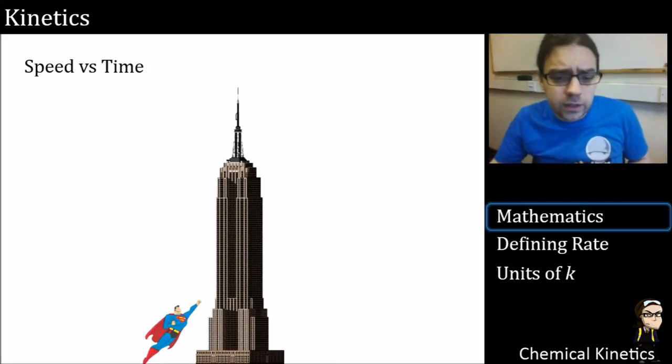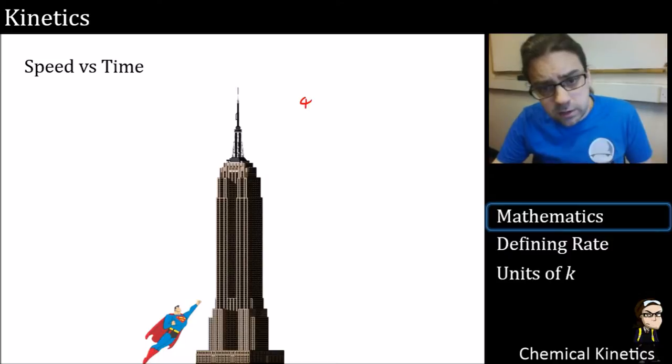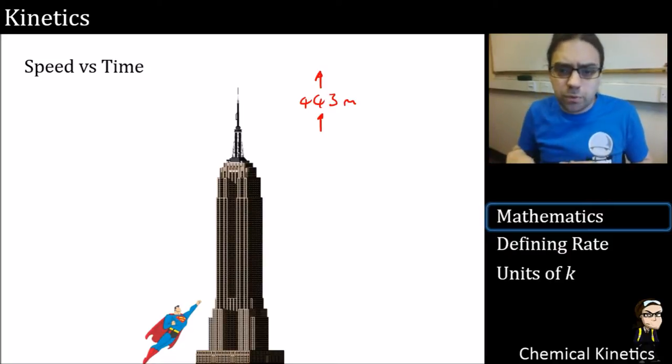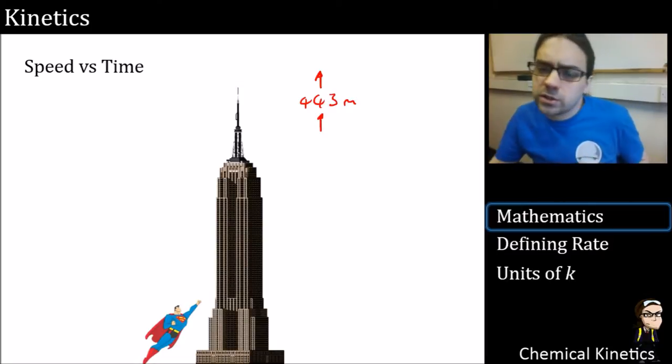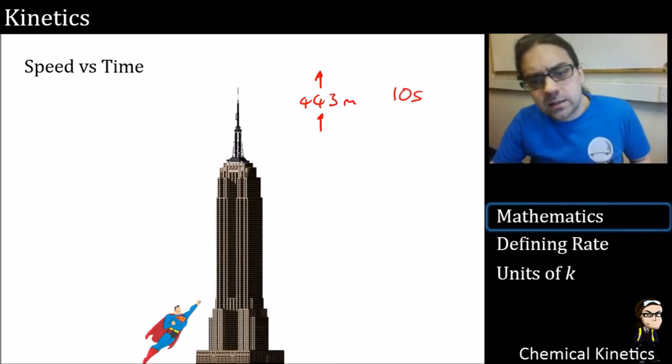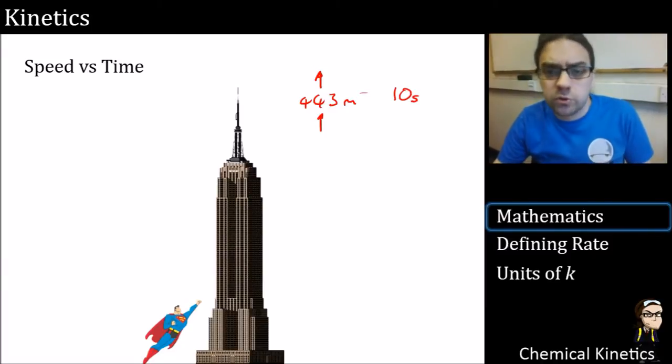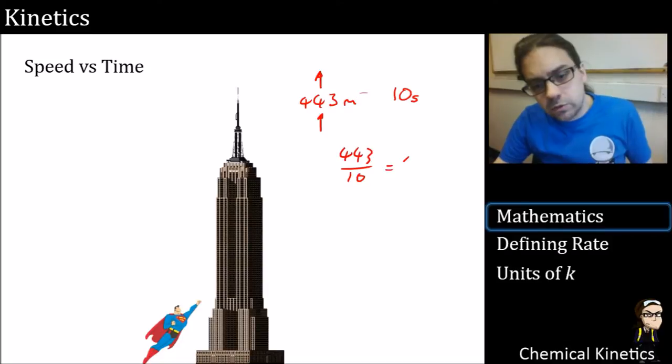This diagram I've got here is Superman and he's going to jump over the Empire State Building. The Empire State Building is 443 metres high. If Superman jumps, it takes him about 10 seconds to get up to the top. Everyone knows speed is distance over time, so 443 metres divided by 10 equals 44.3 metres per second. That's the speed.